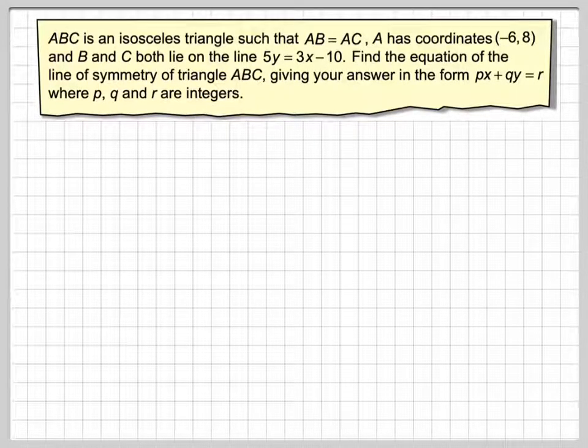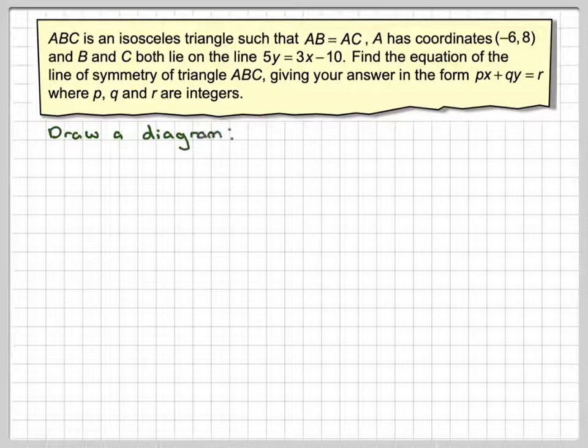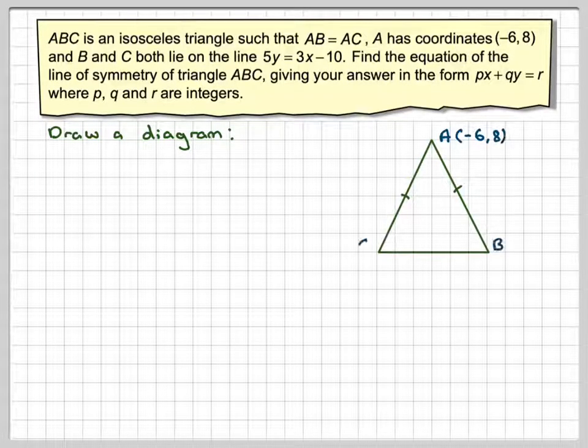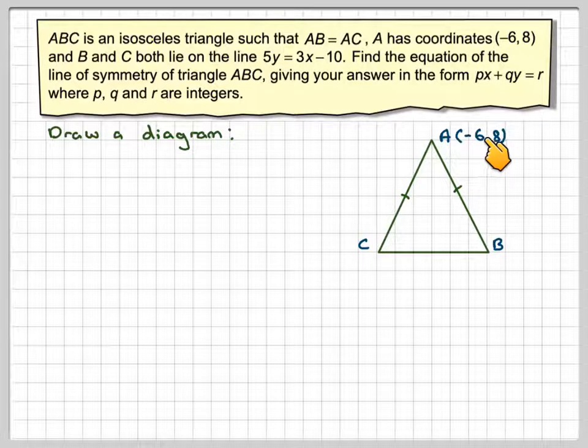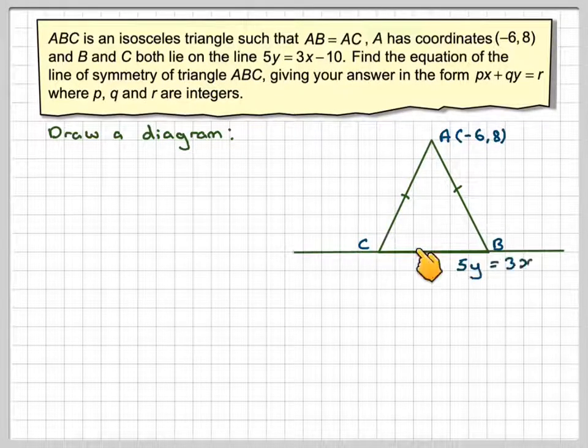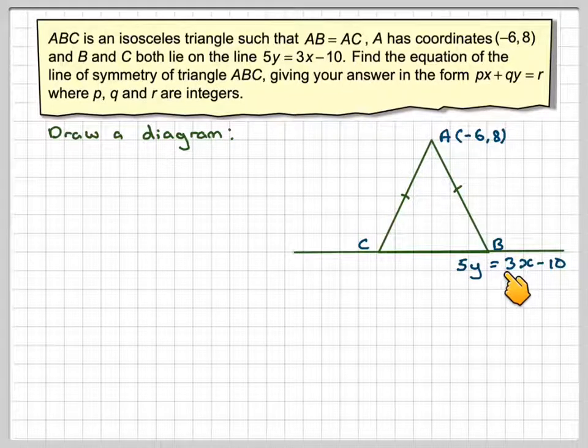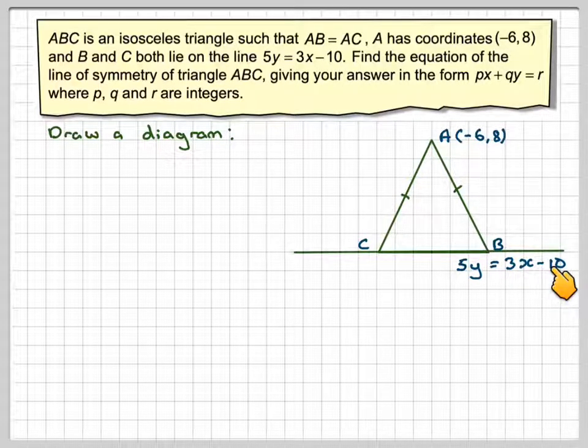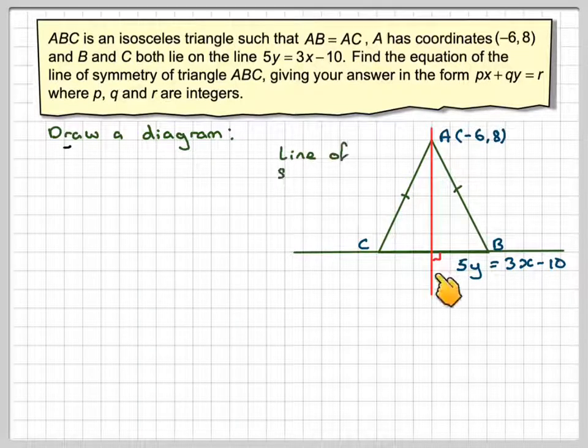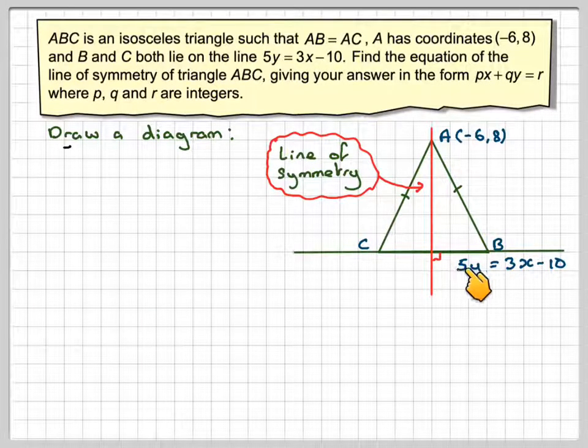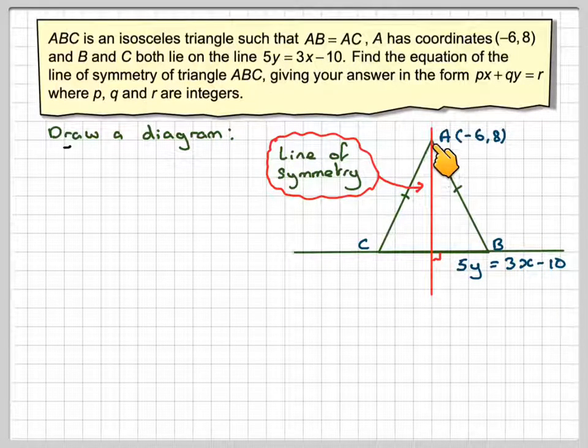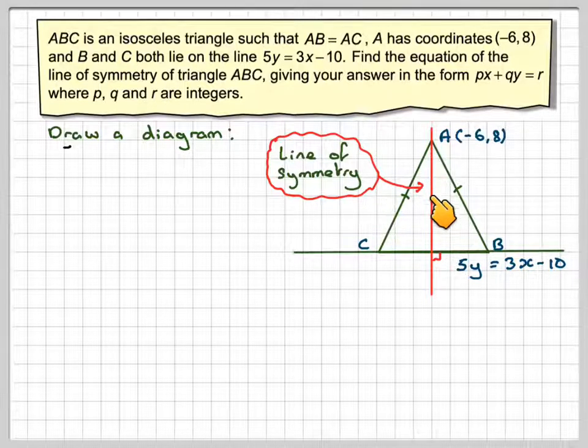In order to do this type of question, you need to draw a diagram. The diagram doesn't have to be exactly according to the coordinates. You just need to draw an isosceles triangle and mark that point as (-6, 8). We know that this line here is 5Y = 3X - 10. You should also mark on the line that you're trying to find, which is perpendicular to the line 5Y = 3X - 10. This is called the line of symmetry.